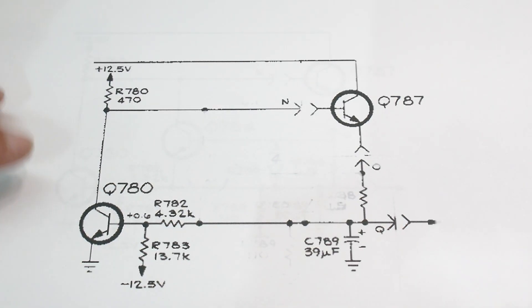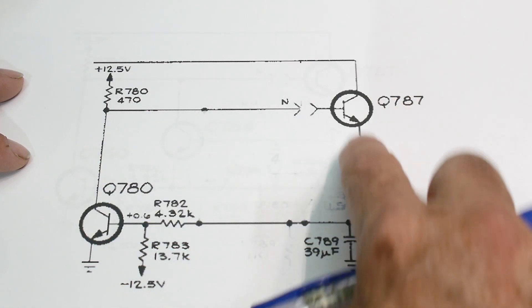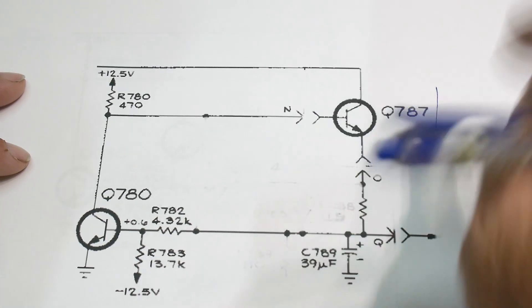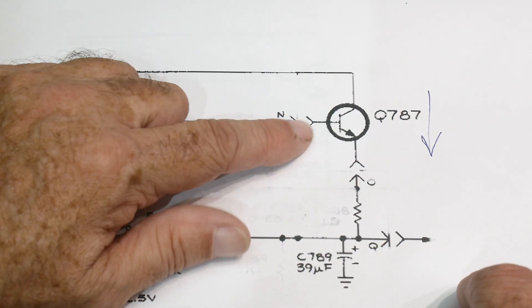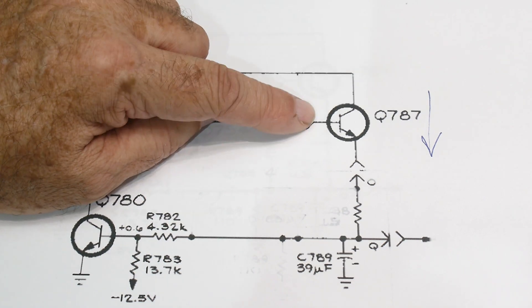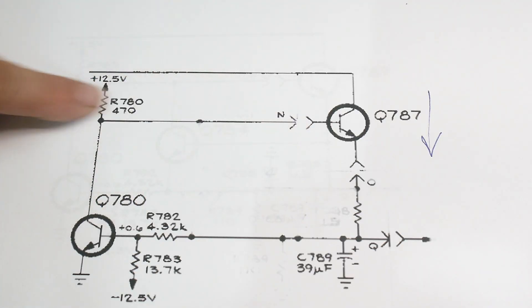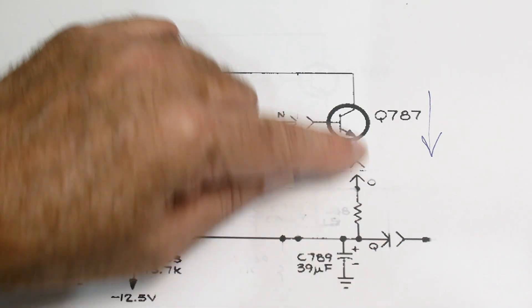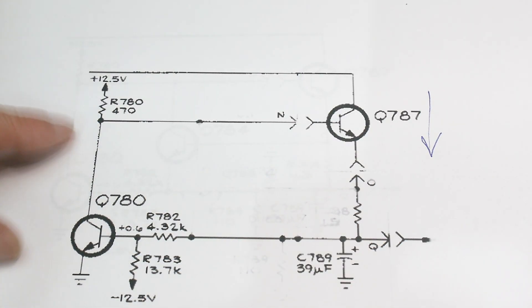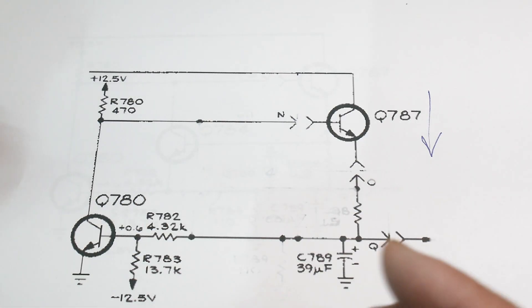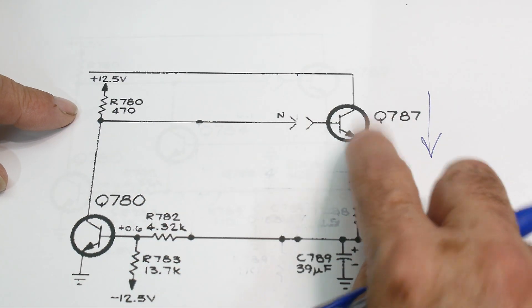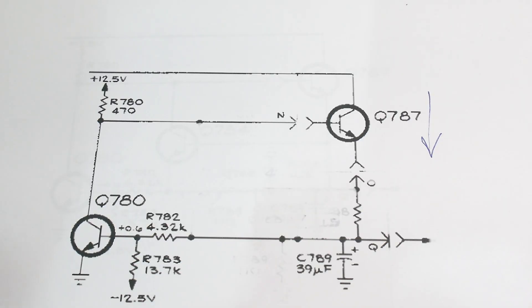If we look at this, this is the pass transistor. The current is going to be flowing in this direction, which means in order for the current to flow, this has to be high. How does this get high? It gets high with this 470 ohm resistor tied up to plus 12 and a half, so this can turn it on. What can turn it off? This guy can turn it off - he can pull it down. So you can see it normally wants to be on, but this thing can turn it off.